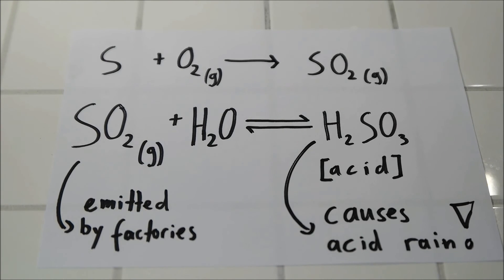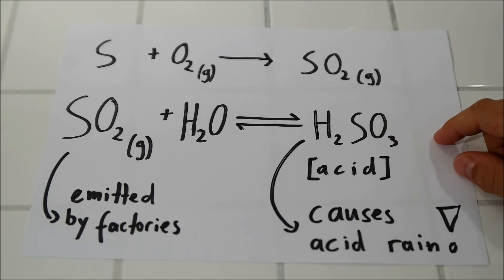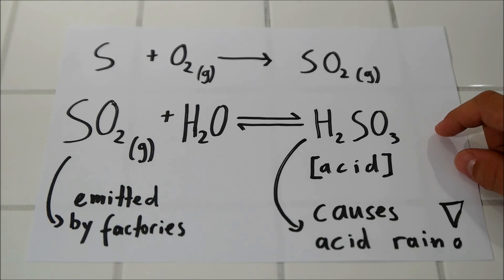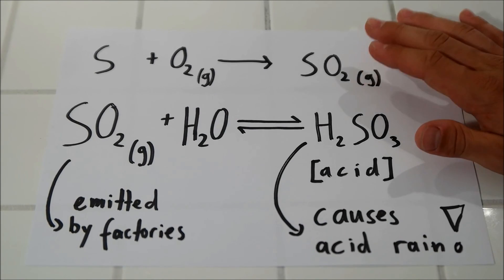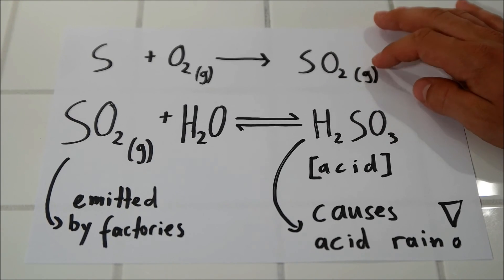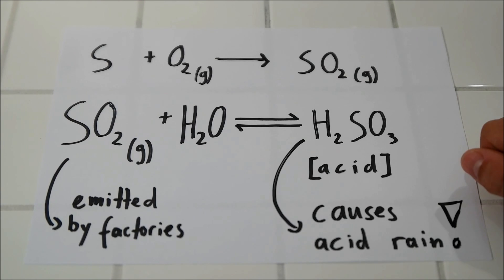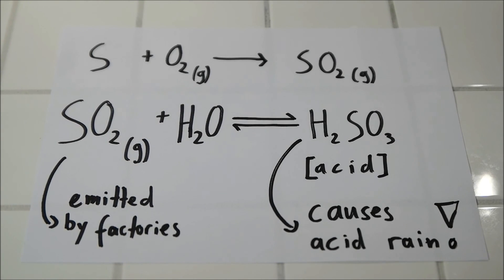And that makes this acid, sulfurous acid, which causes acid rain. So this is one of the gases that's responsible for acid rain.